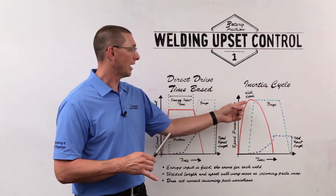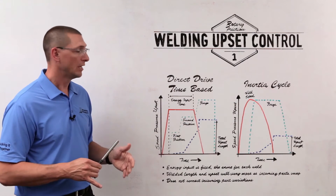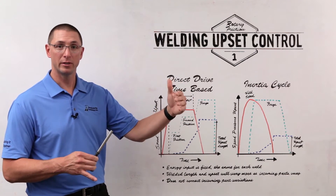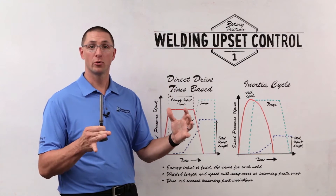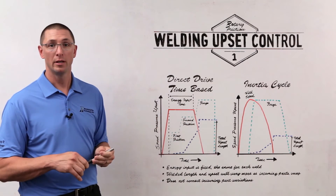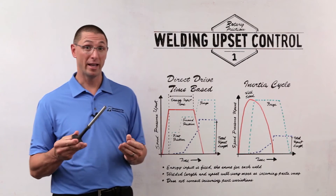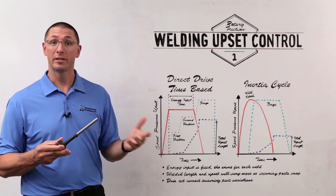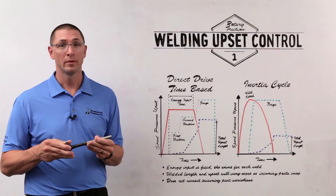In inertia welding, I have a rotating flywheel mass. If I rotate that flywheel up to a certain speed and I disengage, then the kinetic energy stored in that flywheel is consistent every time I make that weld. And again, if I had perfect parts, every time I made these welds I would get very consistent upset.